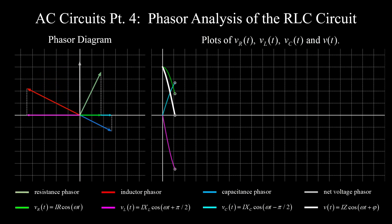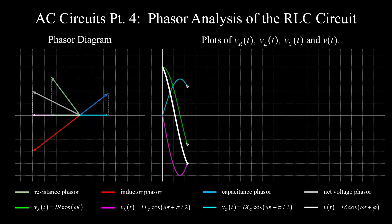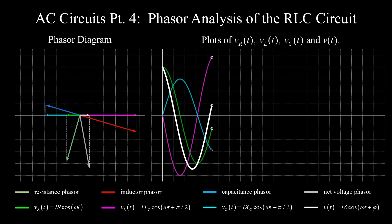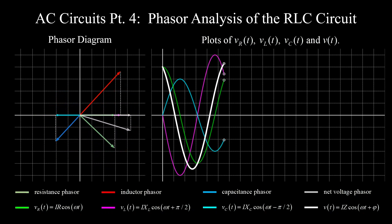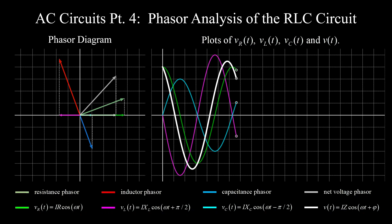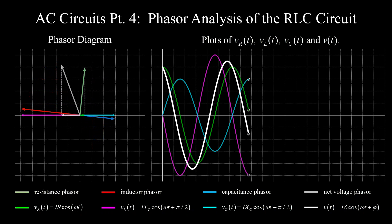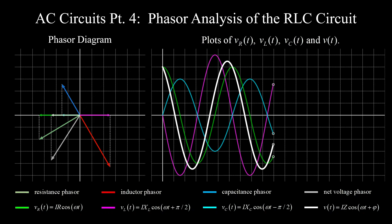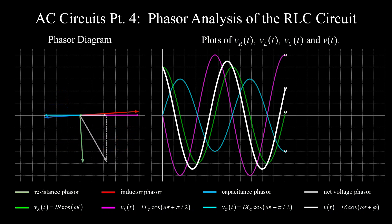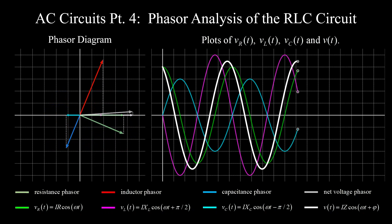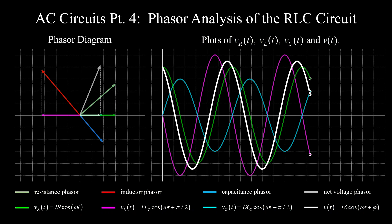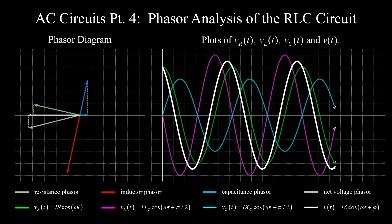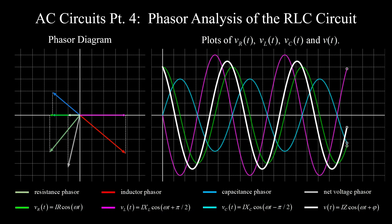In the first three videos of this series we developed the phasor representation for resistors, inductors, and capacitors in AC circuits. But what happens when we combine all three into one RLC series circuit? The short answer is that we're generating waveform spaghetti, but by the end of this video you'll understand it. Let's dive into the phasor analysis of the RLC series circuit.